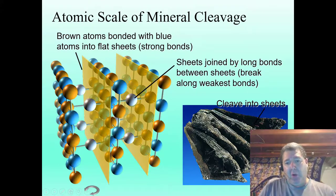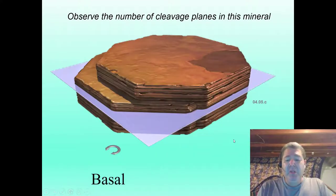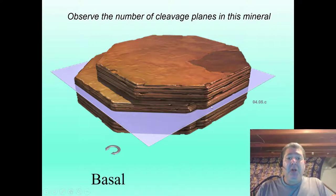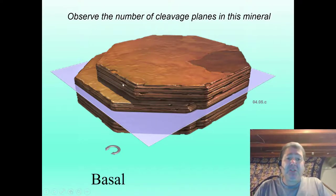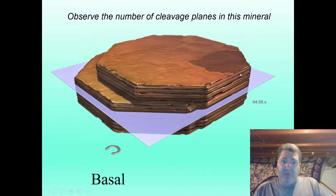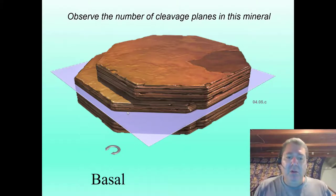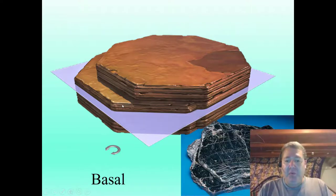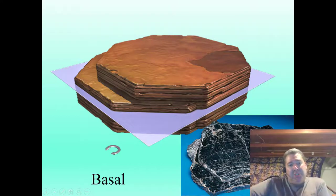This is known as basal cleavage. Our mica minerals — biotite mica, muscovite mica, chlorite, and a bunch of others — have what's called perfect basal cleavage. You can peel them up into little sheets theoretically down to one atomic layer thin. Biotite breaks into these perfect flat sheets.